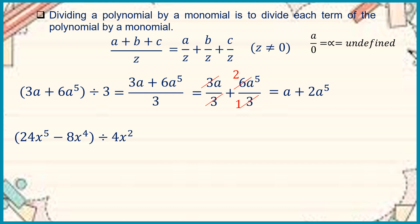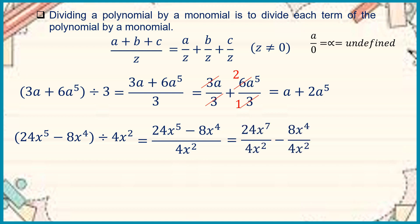Now let us have another one: 24x to the fifth minus 8x to the fourth, divided by 4x squared. We rewrite this as 24x to the fifth over 4x squared minus 8x to the fourth over 4x squared. Simplifying, 24 over 4 becomes 6, and 8 over 4 becomes 2. So we have 6x to the third minus 2x squared. Remember that when dividing monomials with exponents, we just subtract the exponents.